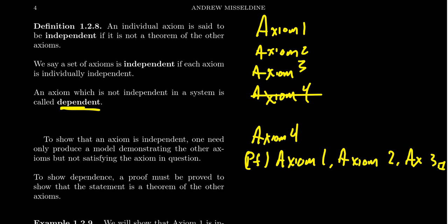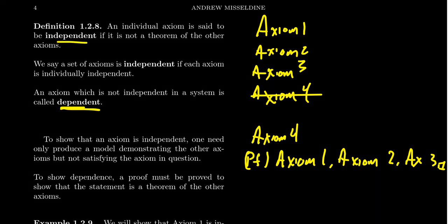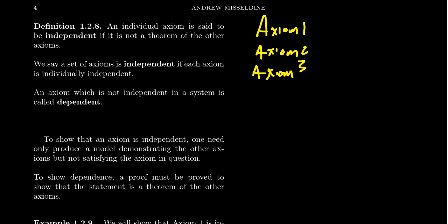If you have a dependent axiom, you don't actually need it because you can prove it from the other ones. An independent axiom means you can't prove it from the other axioms — you need it to further the theory. A set of axioms is independent if each axiom is individually independent, and dependent if one of the axioms is dependent.